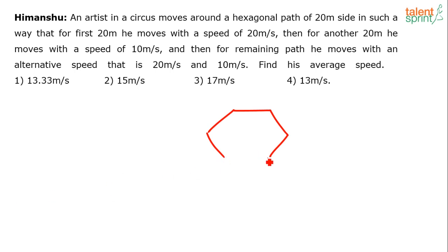There's a hexagonal path. The side is 20 meters, so basically a regular hexagon where each side is 20 meters. Now an artist is moving around this hexagonal path.